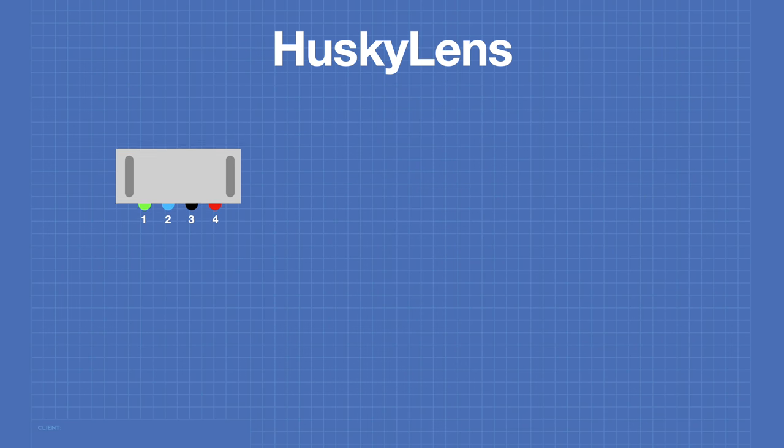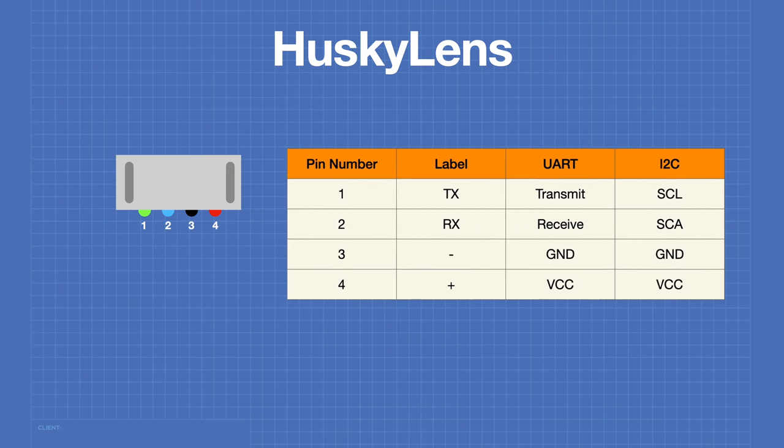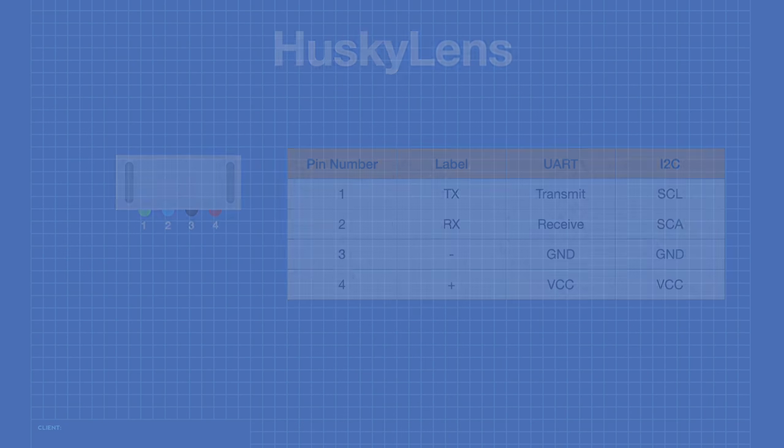The data connector on the Husky Lens is a 4-pin JST connector used in both serial UART and I2C mode. This chart shows the pinouts of the connector in both of those modes.